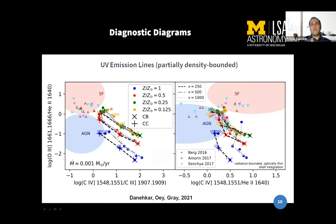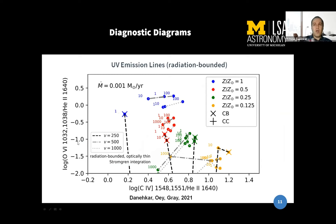We also extracted results for radiation-bounded models and partially density-bounded models, and you see the variation in UV emission lines by different metallicity and ambient densities. Another important line is OVI. In one observation, OVI was observed in starburst regions, in nearby starburst regions. Here you see how the change in metallicity contributes to the formation of catastrophic coolings. You see a diversion from the typical pattern because of catastrophic cooling — models with catastrophic cooling do not follow the typical patterns.